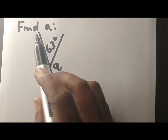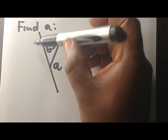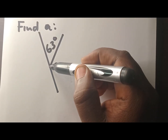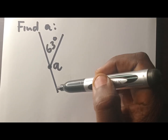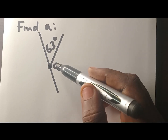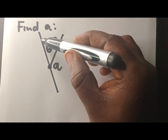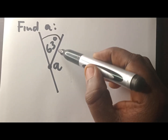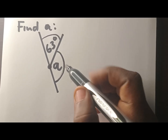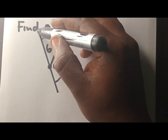So here they say, find A. As you can see, this is A, and this is our straight line. A and 63 are formed at the same point — a corner at the same point. And when you pay attention to it, they are both on the same side of the straight line.